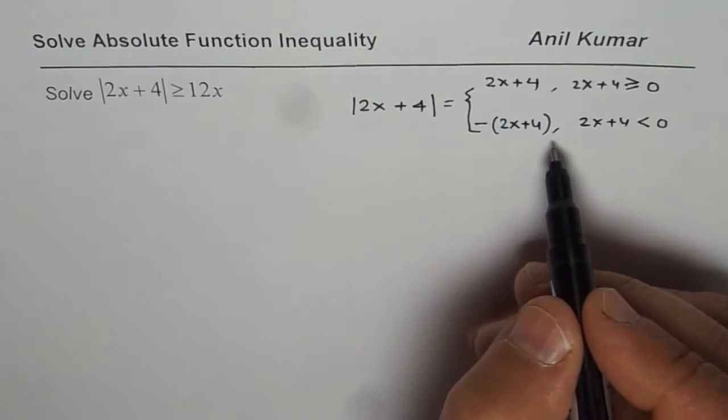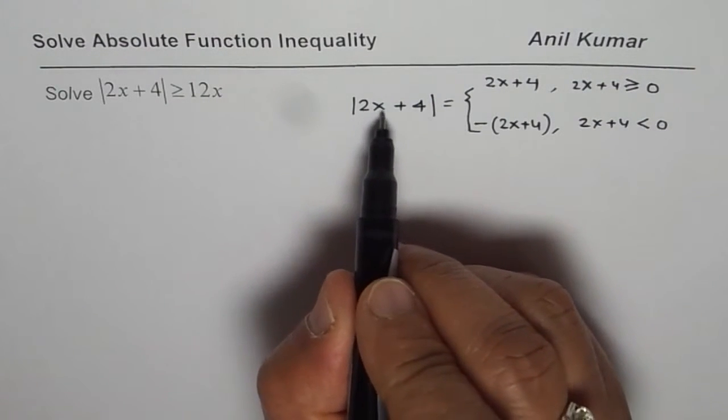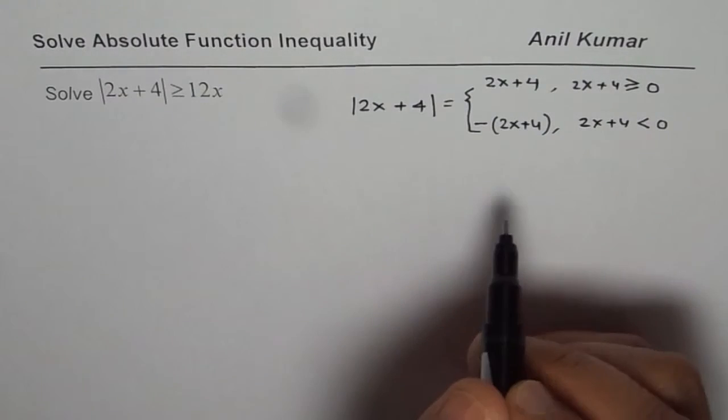Absolute value is always positive. So whenever this value is negative you have to take negative of that. That is what it means.